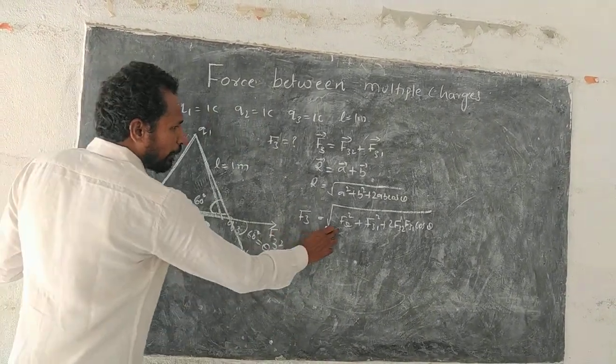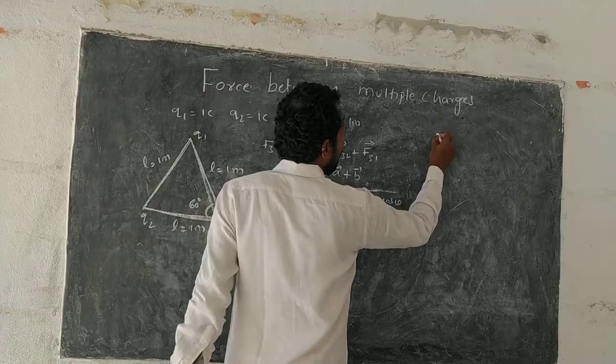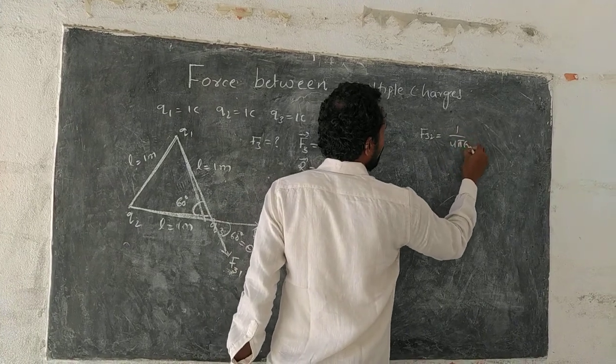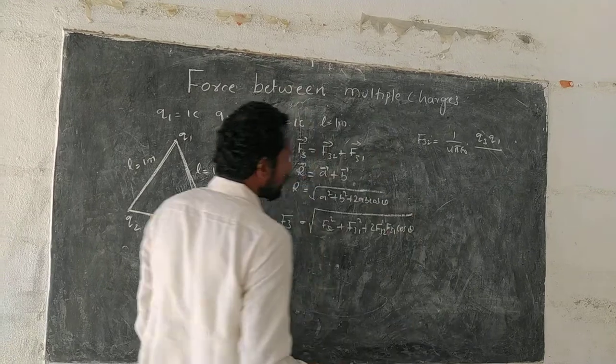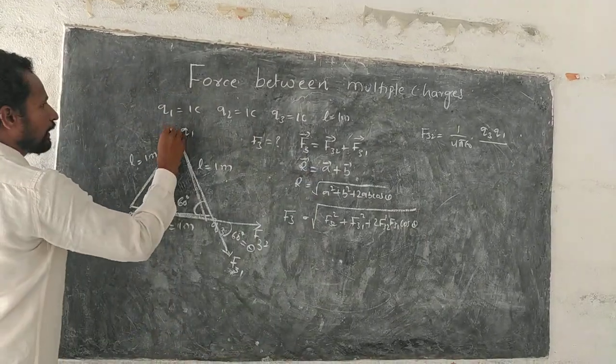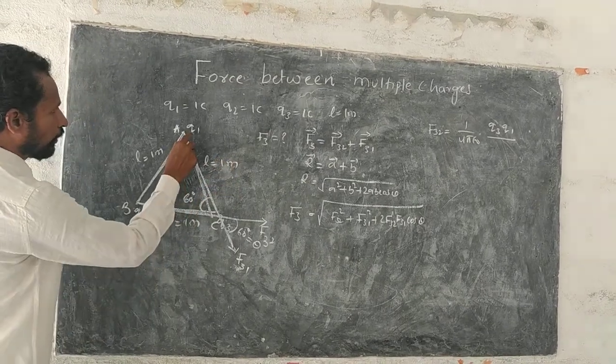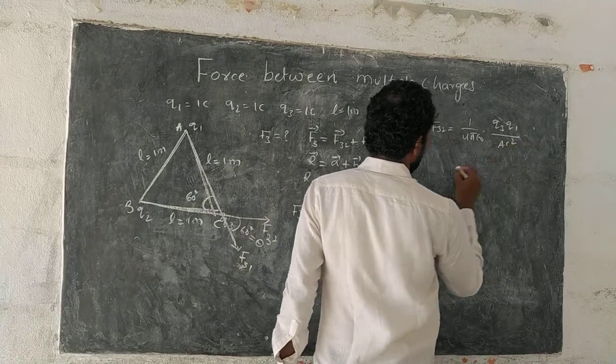Then, we need to find magnitude F32 and F31. Here, I am calculating F32 according to Coulomb's law, 1 by 4 pi epsilon naught, Q3, Q1, by distance between them. Let us say, this is A, B, C. What is the distance between Q3 and Q1? You take AC squared.